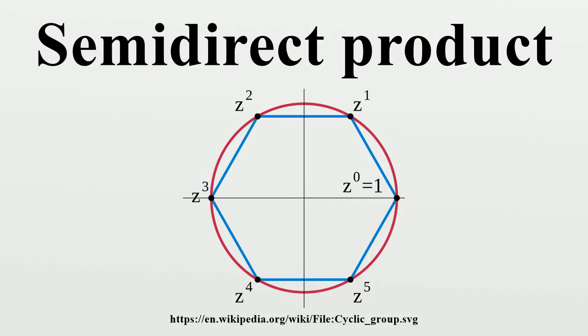This is not the case for semi-direct products, as the two factors play different roles. Furthermore, the result of a semi-direct product by means of a non-trivial homomorphism is never an abelian group, even if the factor groups are abelian.